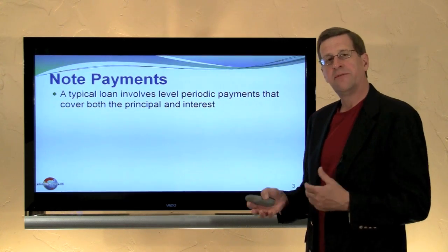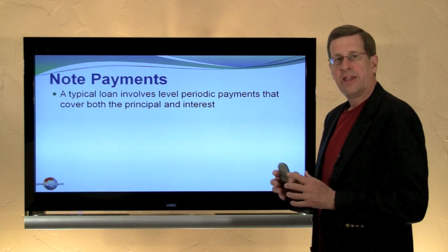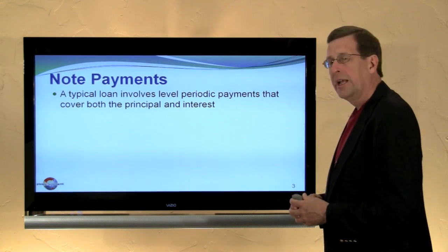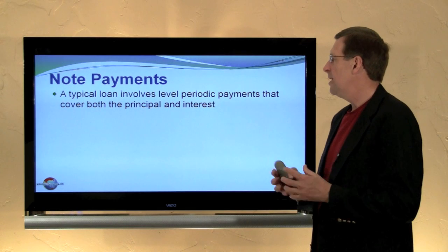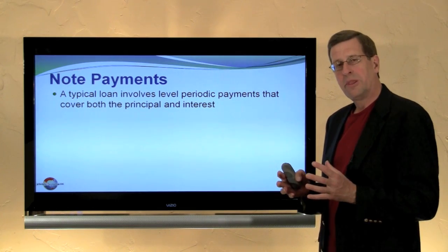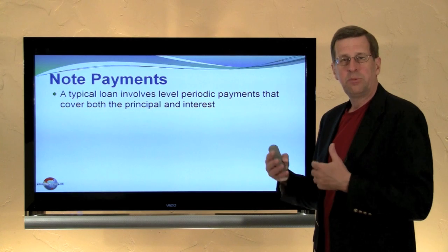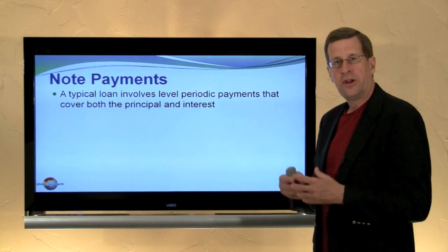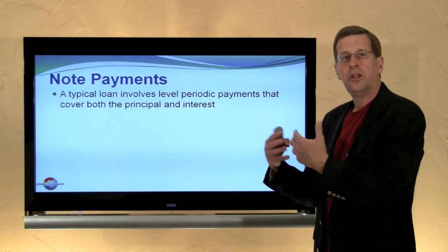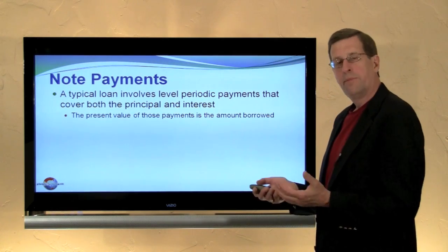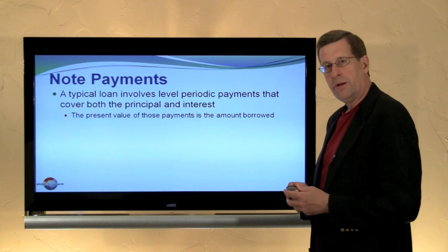This is very much an extension of the previous video where we talked about present value and future value considerations. What I ask you to think about now is a typical loan that involves level periodic payments that cover both principal and interest. That is a stream of payments where each payment is the same over the life of the loan, and at the end of the loan it is paid off. So we have an annuity, and the present value of those payments is equal to the loan amount.